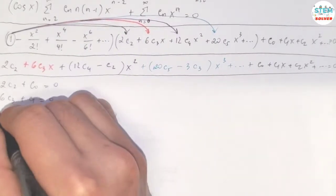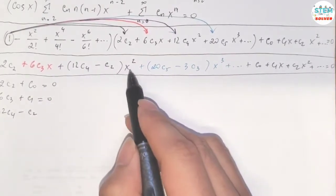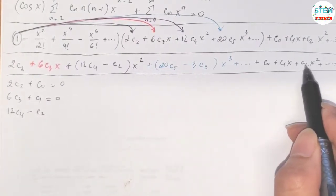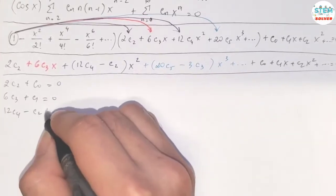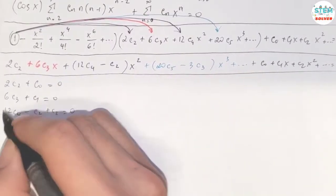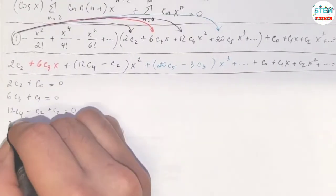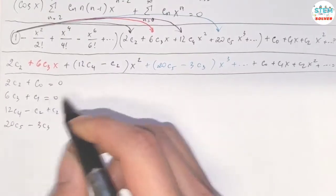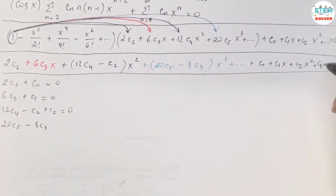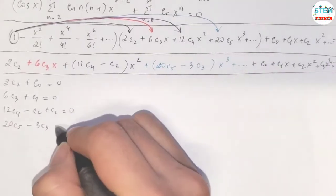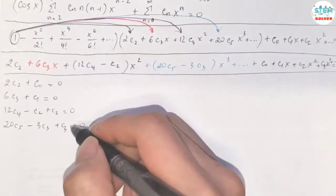Now for this one, we have 12c_4 minus c_2. Now we are looking at x squared terms, so we have this, and on this side we have positive c_2. For x cubed, that's 20c_5 minus 3c_3, and on this side we have c_3. So plus c_3 equals zero.